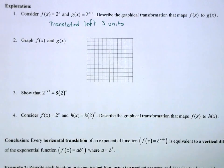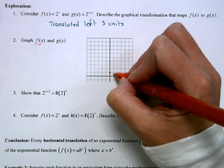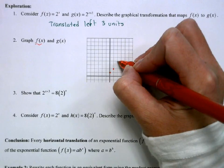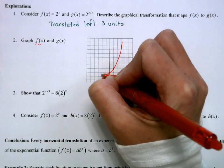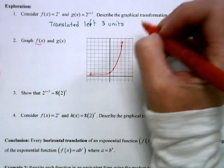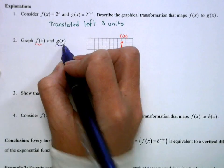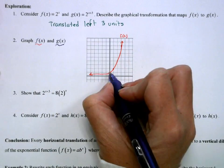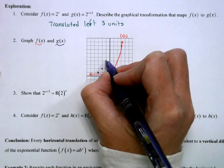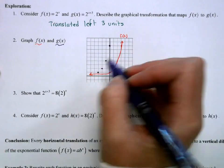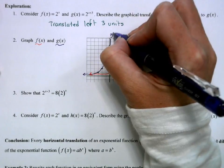So we're going to go ahead and graph 2 to the x, which is my f of x. 2 to the 0 is always 1. 2 to the 1 is 2. 2 squared is 4. 2 cubed is 8. So that's going to be my graph of f of x, which is my original function. Now we're going to translate this whole thing to the left 3 units. So I'm going to take this point, pull it back here. I'm going to take this point, pull it back here. Take this point, pull it back. Take this point, there. So that's g of x.